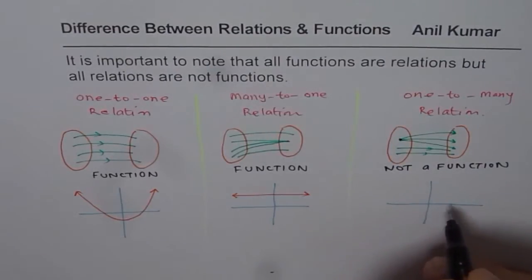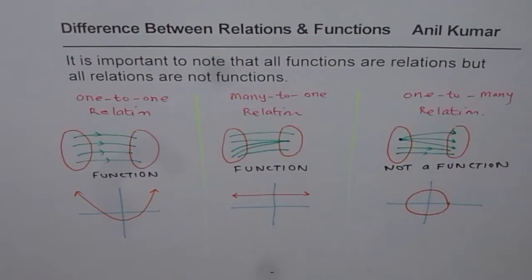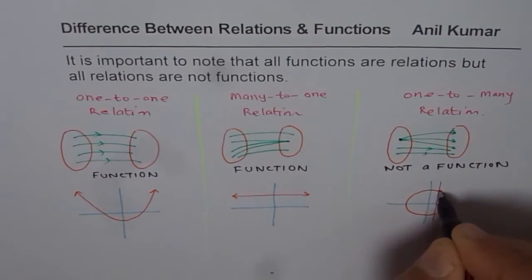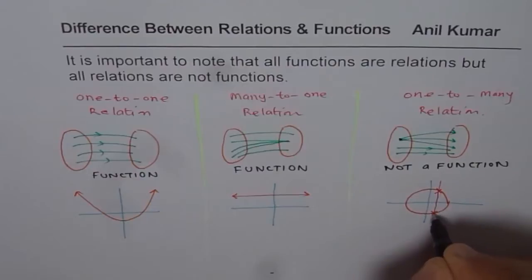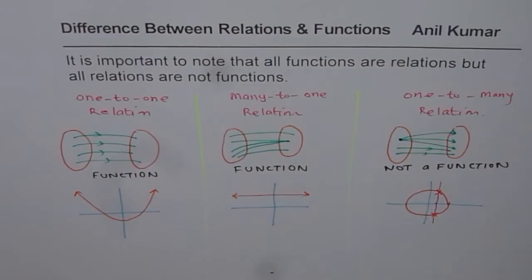One-to-many. Examples could be circle. In circle, what do you find? If I draw a vertical line, in that case, this vertical line has two values here. One x-value corresponds to more than one y-value, it is one-to-many. And this relation is not a function.